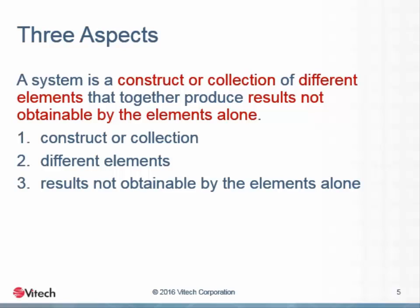There are three aspects to the definition which merit special notice. The first aspect in the INCOSE definition requires that a system contain different elements — a single element cannot comprise the system in and of itself. As science advances, we find that almost everything in our world can be decomposed into constituent parts, meaning almost everything is in some sense a system. We will use the definition to limit our consideration to elements at the lowest level of our decomposition, while acknowledging that nearly every system is composed of subsystems which we treat as component parts.